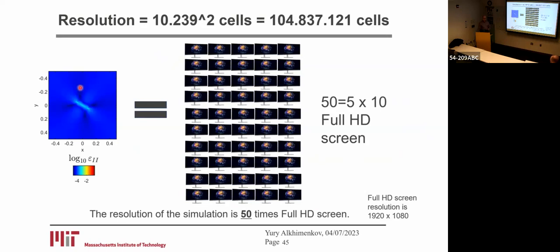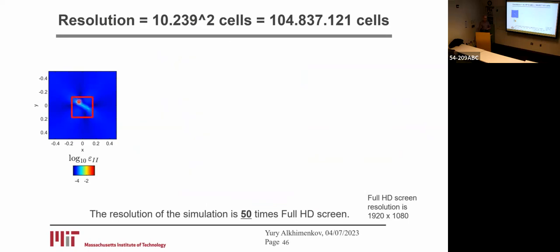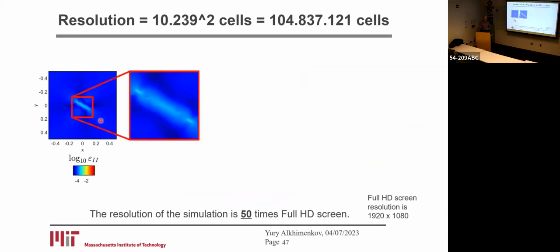Let's look at the physics of what we can achieve using such high resolution. Let's zoom in. Now you can see the strain localization pattern — it's non-symmetric, so it's correct. A question from the audience: why does strain localization always go up to the upper left?